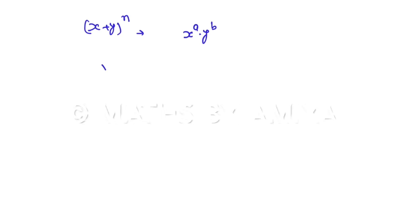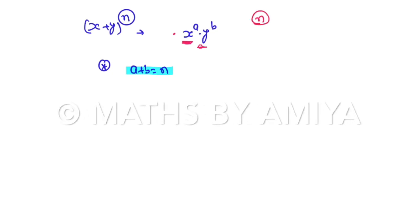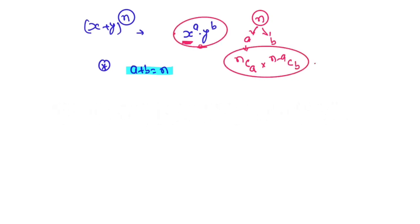If you have any expression like (x + y) raised to power n, we need to find a general term. For a term x^a · y^b, you must know that the sum of powers must equal the total power — this is called power distribution. We divide n into two groups a and b, giving nCa ways, then the remaining (n−a) in Cb ways. So the coefficient is nCa · (n−a)Cb, and the term is x^a · y^b.